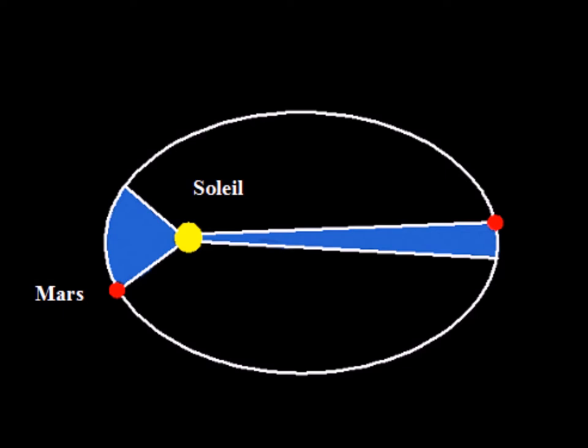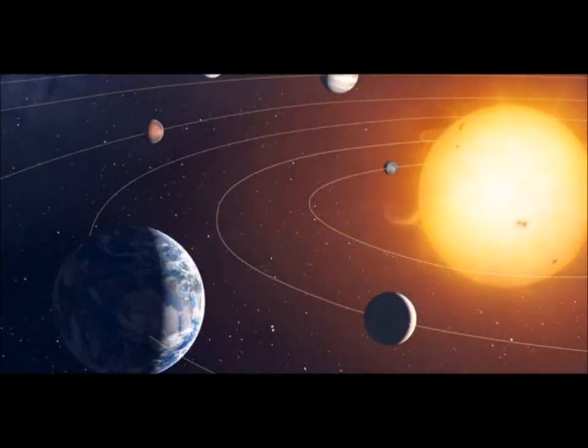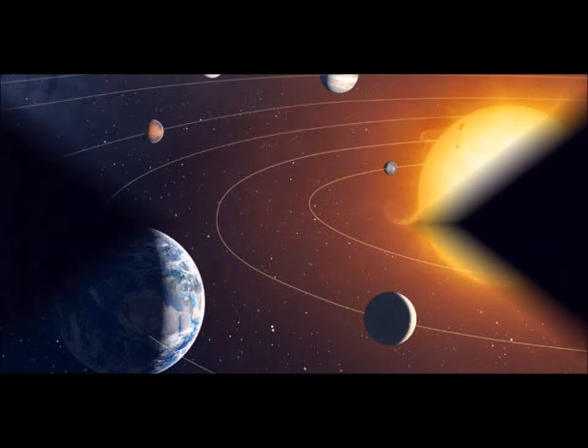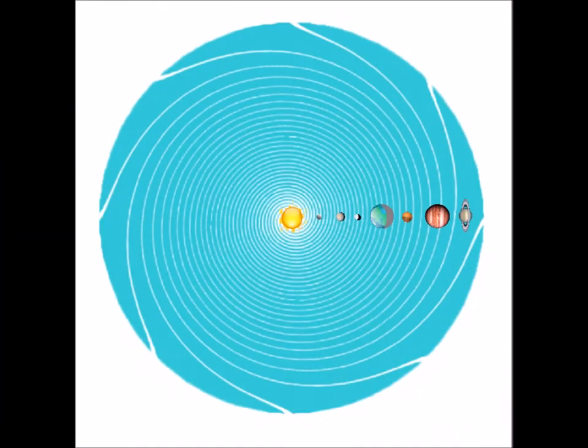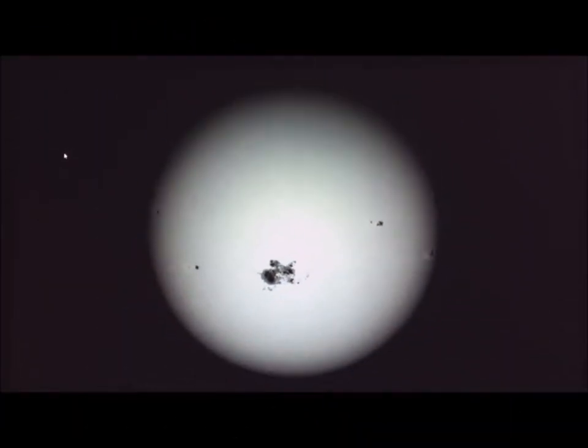He then determined the laws of the motion of the planets, the famous law of the areas in particular. It is in his calculations that mathematicians have discovered, much later, errors that compensate each other. Another important progress, Kepler came to the conclusion that the cause of the motion of the planets is in the sun. And for the moon, the cause of its movement is that the sun turns on itself.